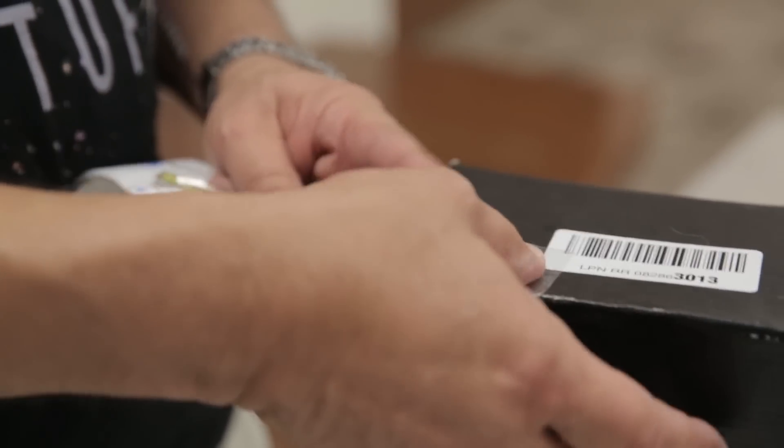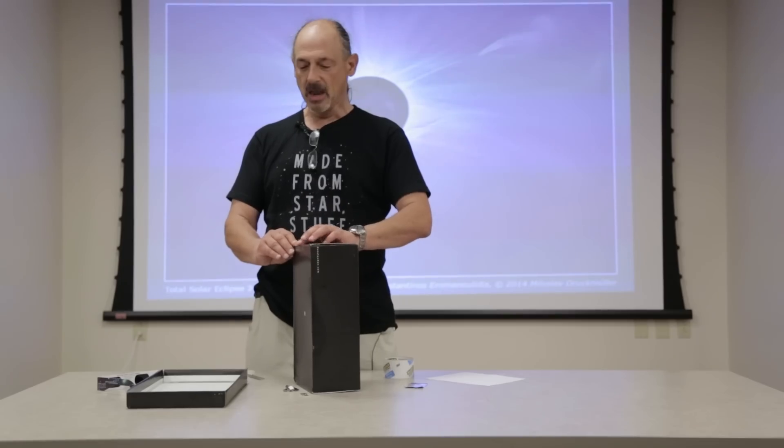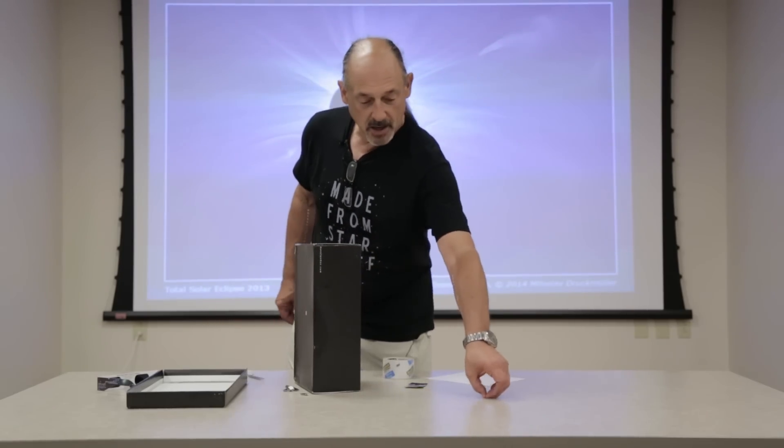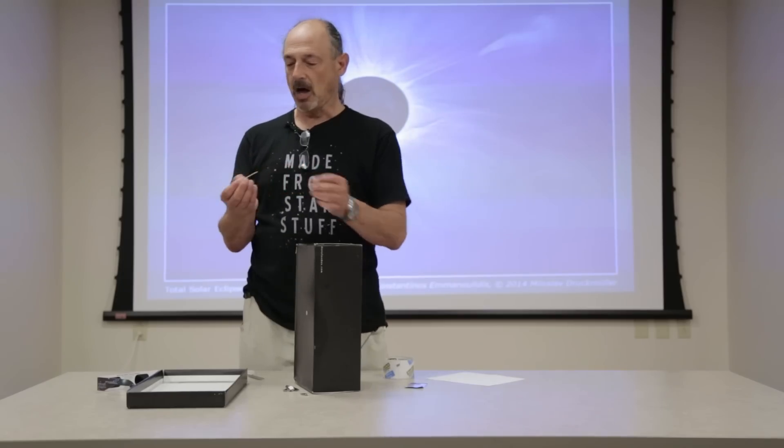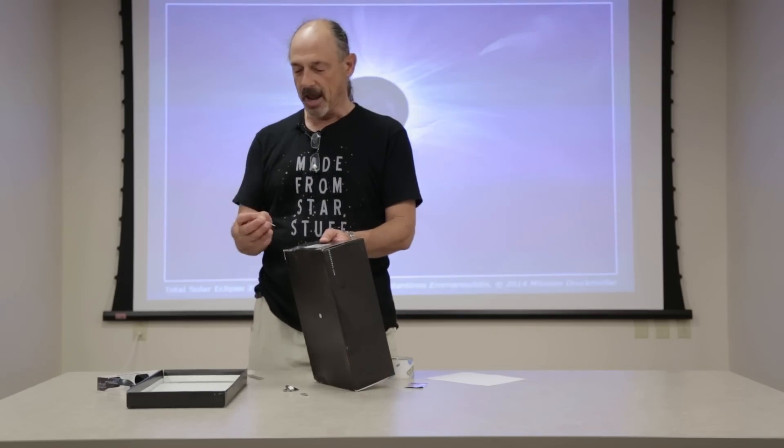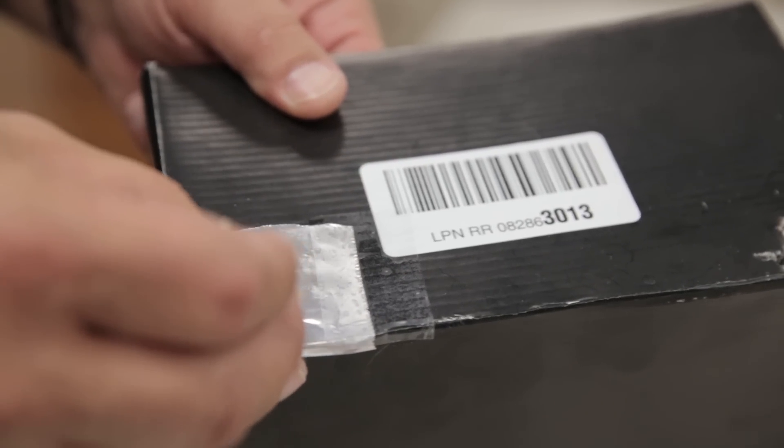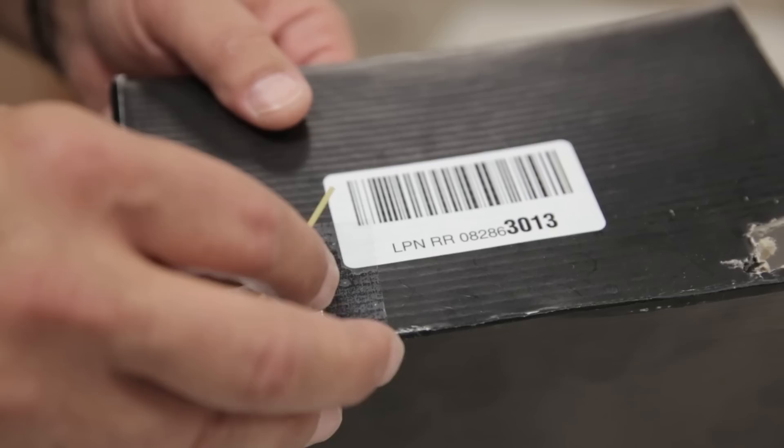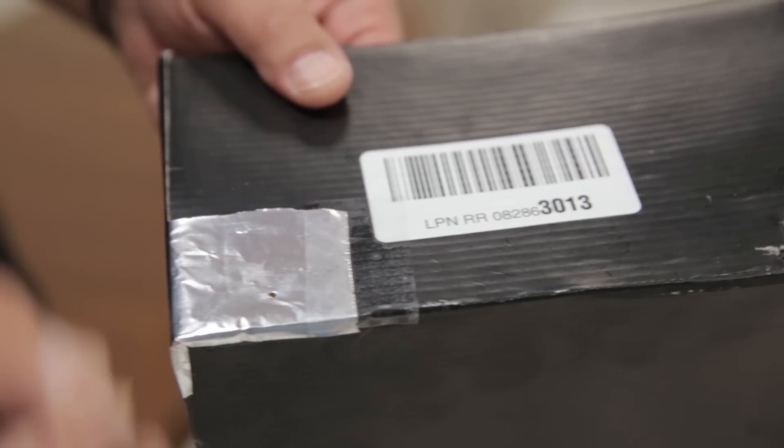Then, feeling where the hole in your shoebox is, you can use a piece of uncooked spaghetti or a nail to puncture a hole right through the foil. And it is through this hole that we will allow sunlight to pass.